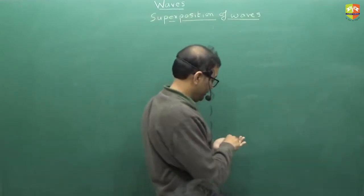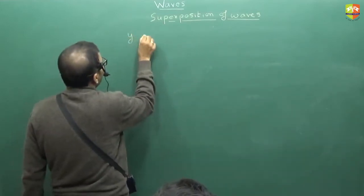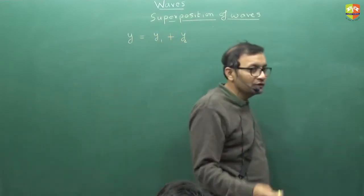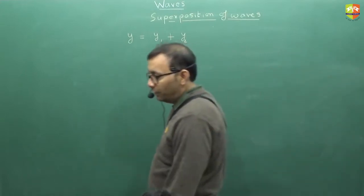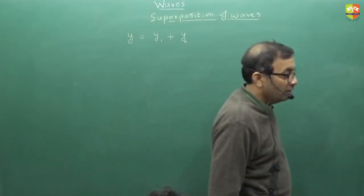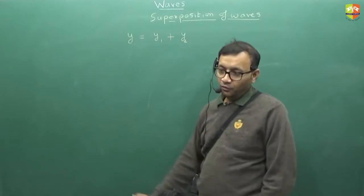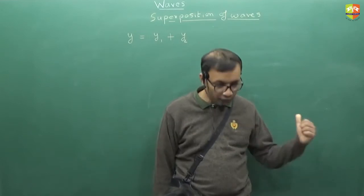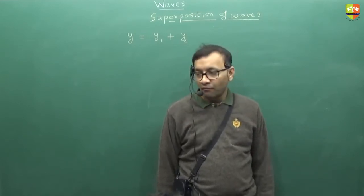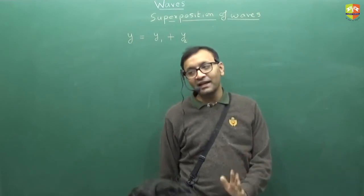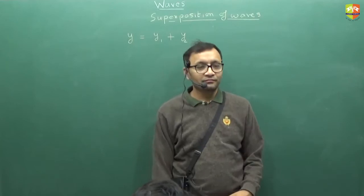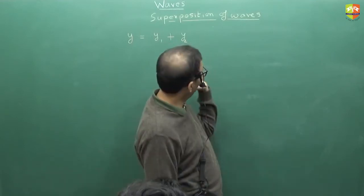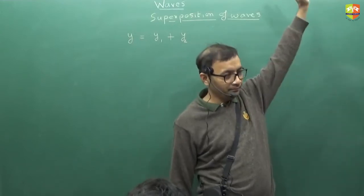So according to superposition principle, y is equal to simply y1 plus y2. y1 and y2 are the wave equations of the two waves. Please write it down. According to superposition principle, y equals y1 plus y2. When the two waves meet, simply you need to take the algebraic sum of the two. y1 is not a. y1 is a sin(kx - ωt). So when you add it, you have to add the sin.